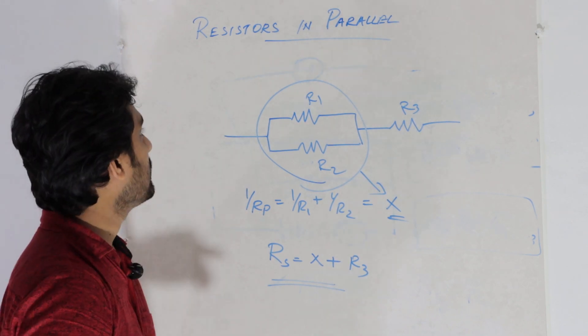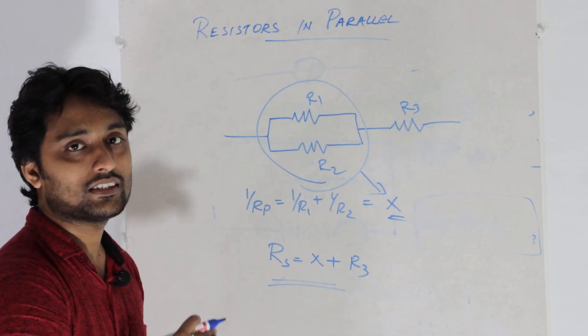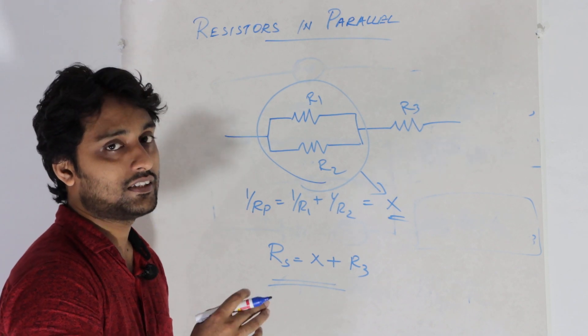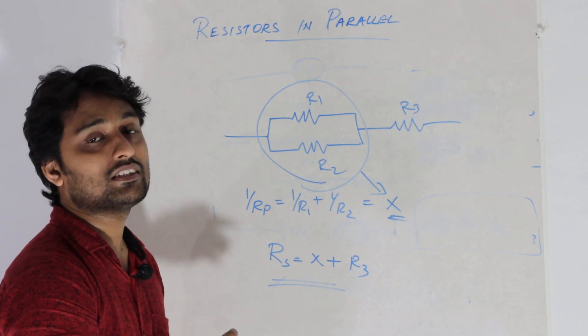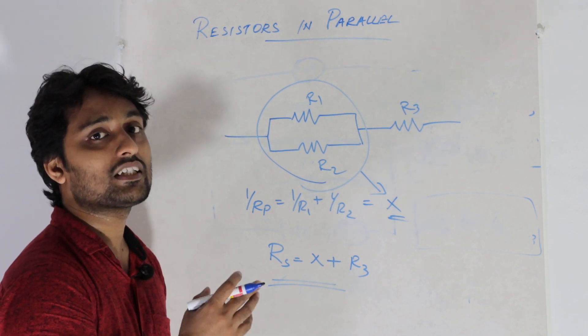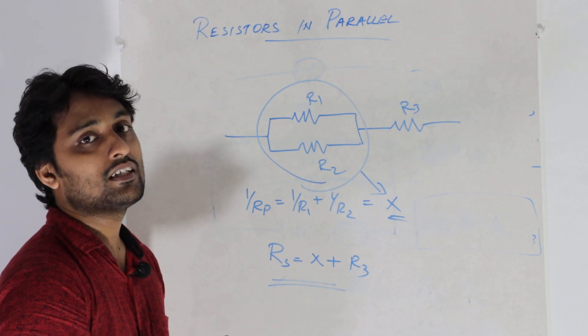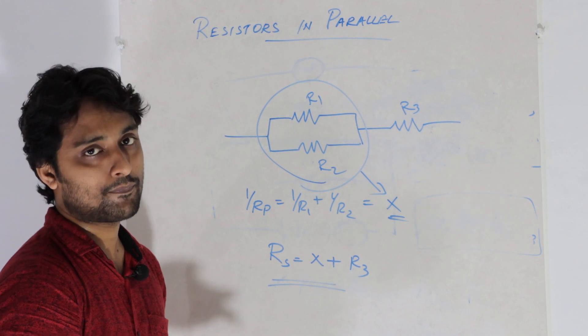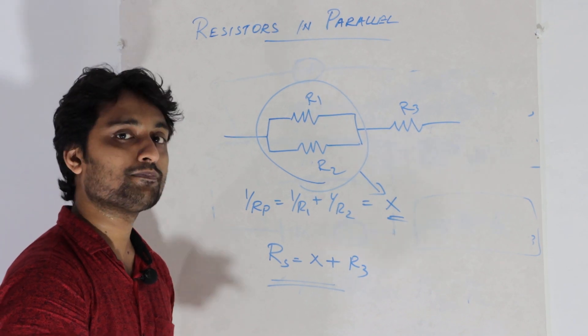So I think you have understood what resistors in parallel are, what the total resistance is, and how they are connected in parallel. Okay, thank you.